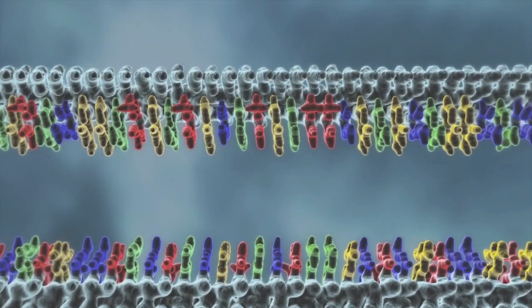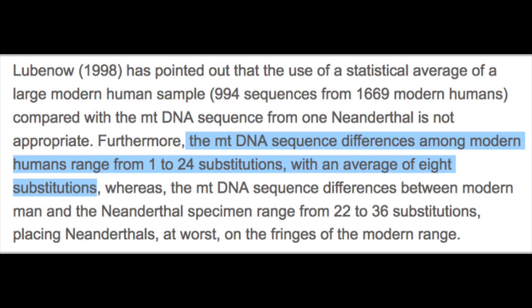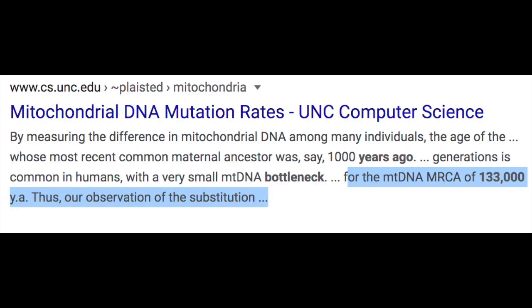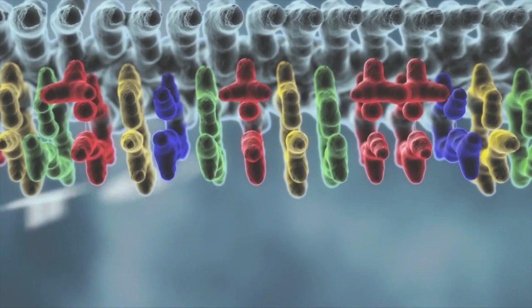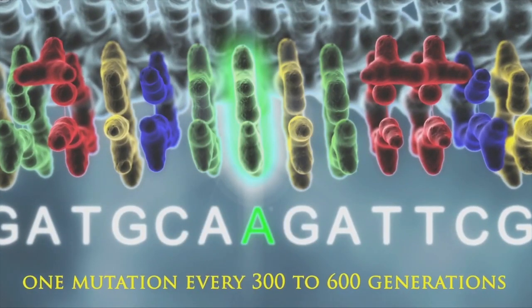We can also look at substitution rates, because those are easier to count. Evolutionists looked in the human genome and discovered that all of humanity only has 24 fixed substitution differences between them. Because they believed in evolution, they made a prediction based on this new evidence back in the 90s when they discovered this. They believed that the last bottleneck was 133,000 years ago, so they assumed that one substitution must occur every 12,000 years if evolution is true, or one mutation every 300 to 600 generations.